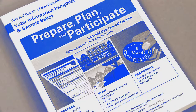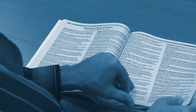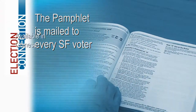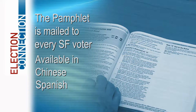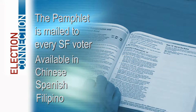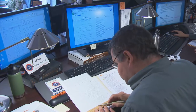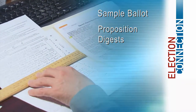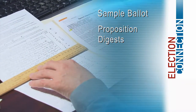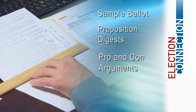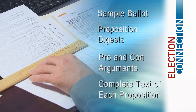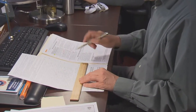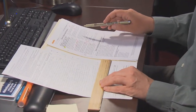There's the voter information pamphlet, which is mailed to every registered San Francisco voter. The pamphlet is also provided in Chinese, Spanish, and Filipino upon request. The voter information pamphlet features a sample ballot, proposition digests created by the ballot simplification committee, pro and con arguments for each proposition, and the complete text of each proposition. Almost all of the content in the voter information pamphlet is required by either state or local law.